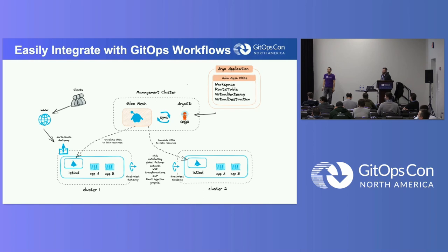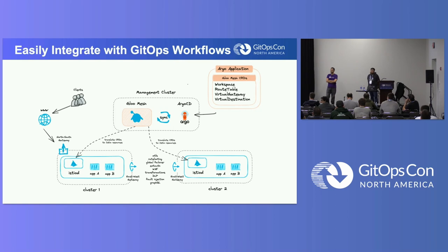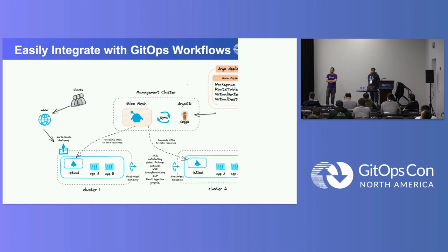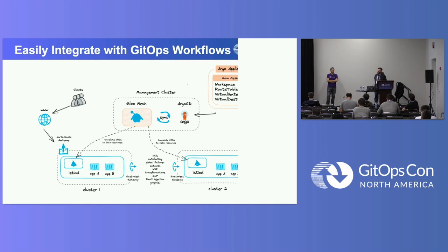[Audience question about diagram]: The top part of the diagram shows Gloo Mesh being synced with Argo CD — those Gloo Mesh CRDs being synced with Git. But then there's an arrow about Gloo Mesh creating or translating Istio resources in the individual clusters. Are those Istio resources — does their configuration ever show up in Git, or is it only in the mind of Gloo Mesh? [Response]: It would be Gloo Mesh's abstraction of the Istio resources, yes.